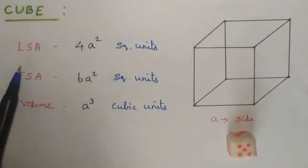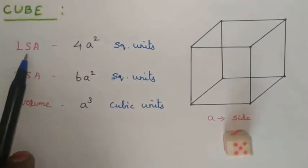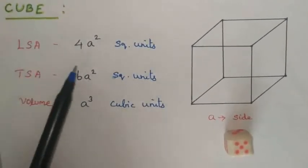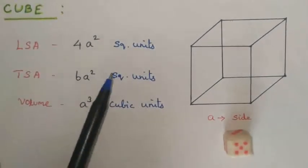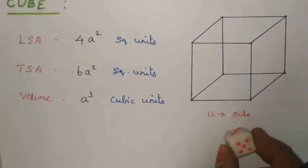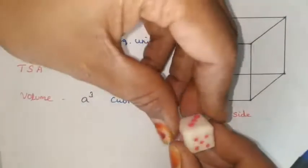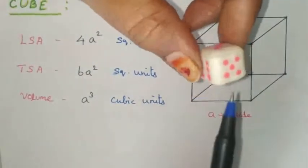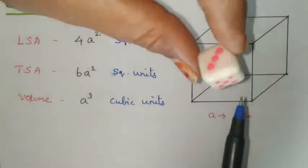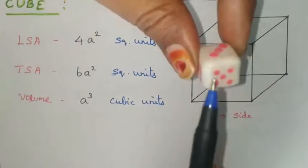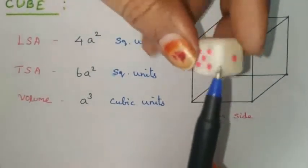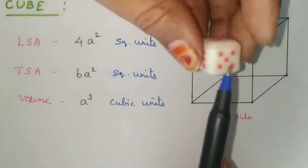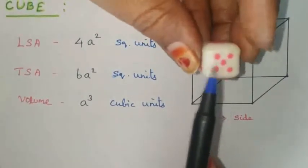Let's look at the cube. This is a cube. In this cube, we can identify sides 1, 2, 3, and 4.